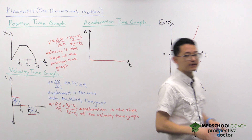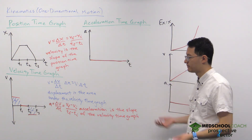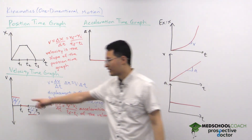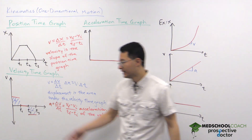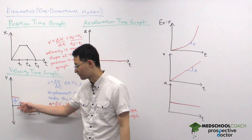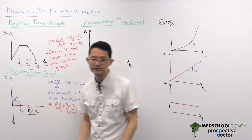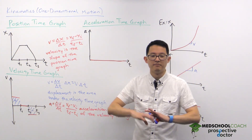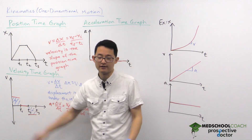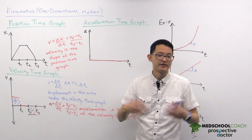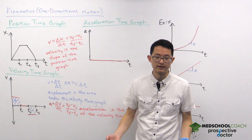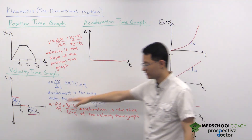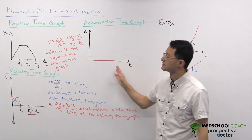One clarification: you might wonder how acceleration can be zero if velocity changed at T1 and T2. Technically, there was acceleration for velocity to change at those points, but the MCAT won't test you on those minor instances where acceleration would appear to be infinite due to an instantaneous velocity change. In this context, acceleration is simply the slope, and since the slope is always zero, we get that flat acceleration-time graph.